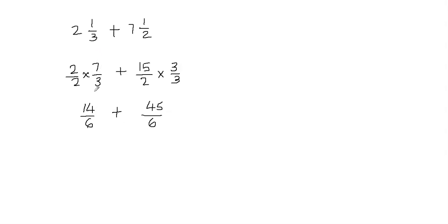I multiplied the first fraction by the other fraction's denominator, which was 2, so I multiplied by 2 over 2. I did the same with the second fraction — the other fraction's denominator was 3, so I multiplied by 3 over 3. Remember, whatever you do to the denominator, you must do the same to the numerator to keep the fraction balanced. Basically, we're just generating equivalent fractions.